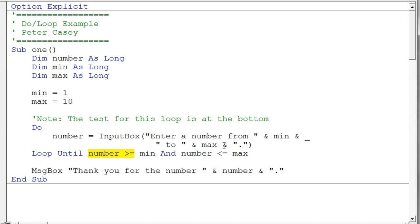The test says do this until the number is greater than or equal to min and the number, keyword and here, and the number is less than or equal to max. So that basically says it has to be in the range from 1 to 10 in this case.